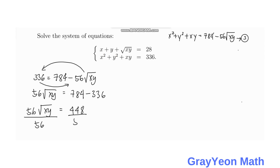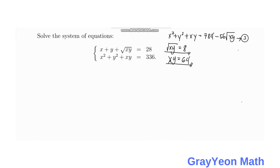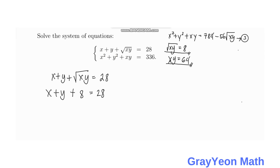Dividing both sides by 56, the square root of xy is equal to 8. Squaring that, xy equals 64. Since we know the square root of xy is equal to 8, we substitute that back into Equation 1: x plus y plus 8 equals 28, so x plus y is equal to 20.